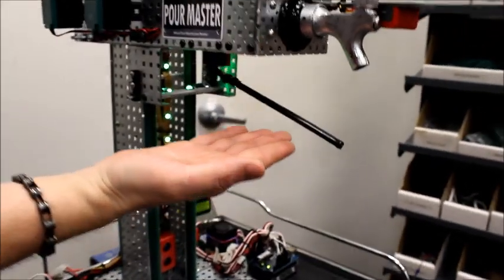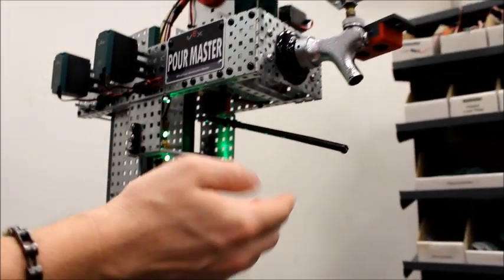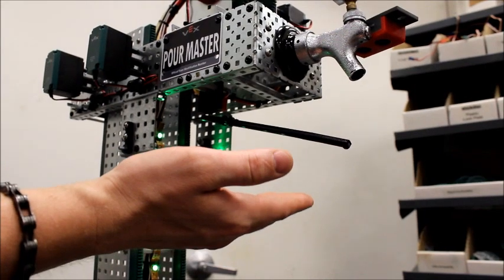Here we have our cup limit sensor, which detects the height of any glass we decide to stick under the PoreMaster Pro.